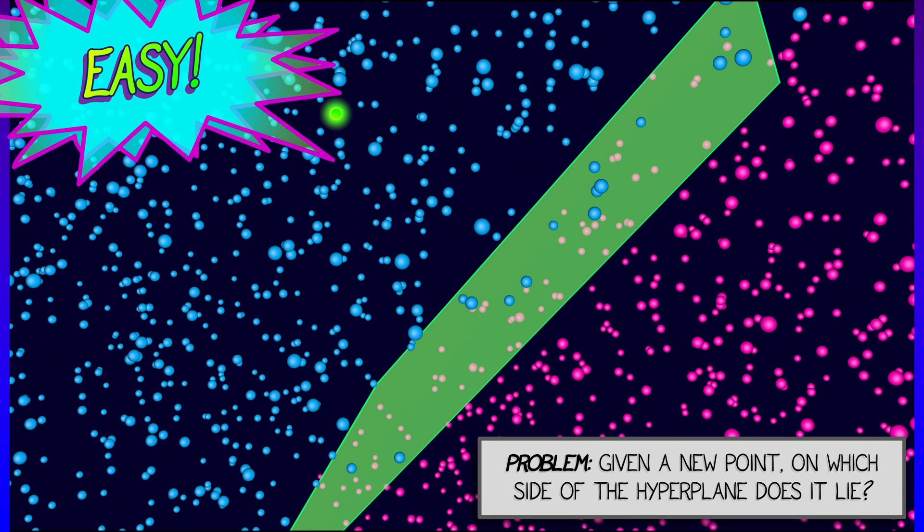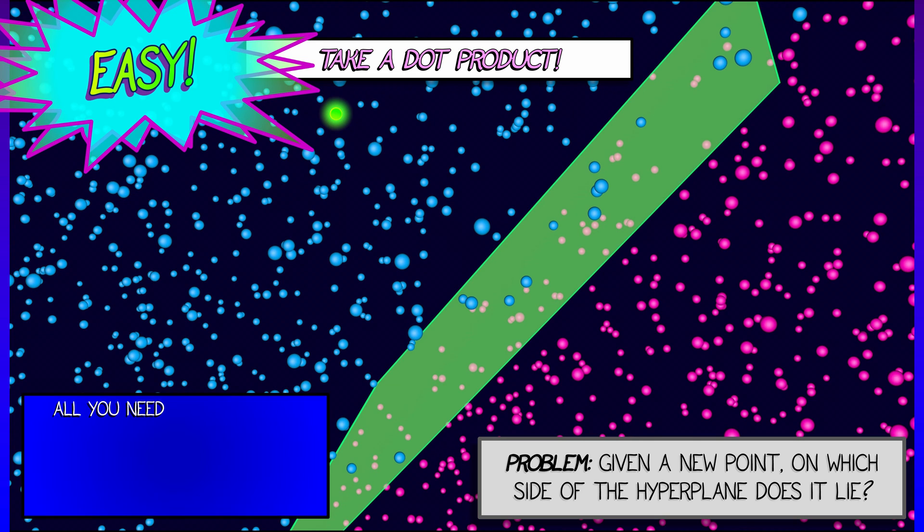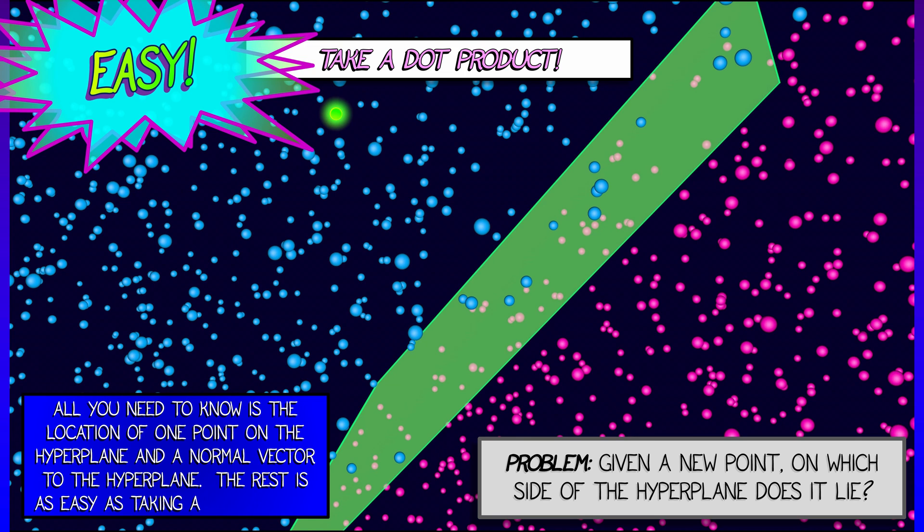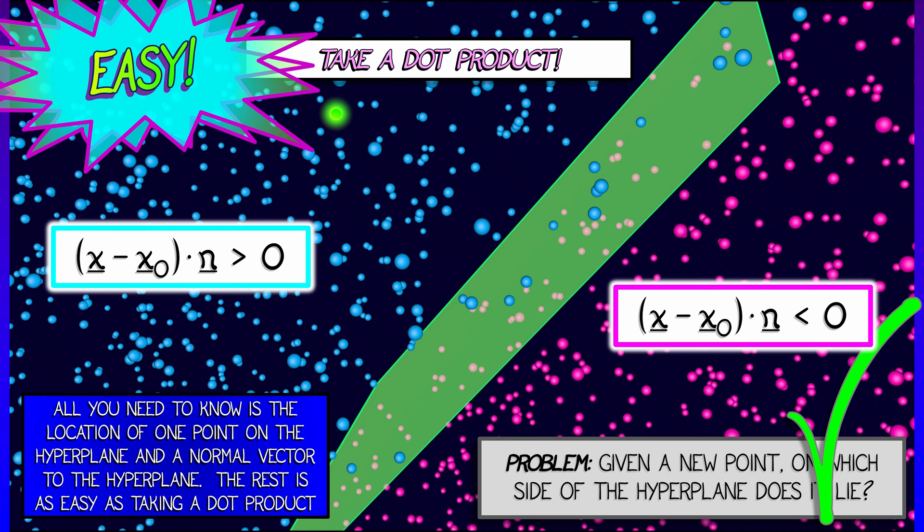Well, to figure that out, I simply take a dot product and register whether it's positive or negative. More specifically, choose some point on the hyperplane and an orthogonal vector, say n. Then I take the dot product between the vector from my chosen base point, my new data point, and this normal vector n.